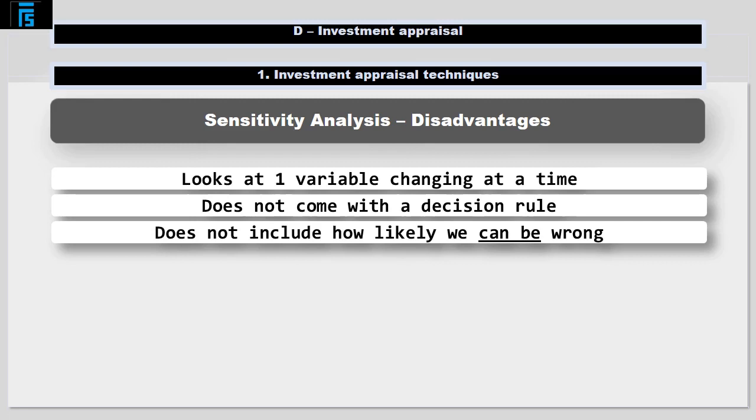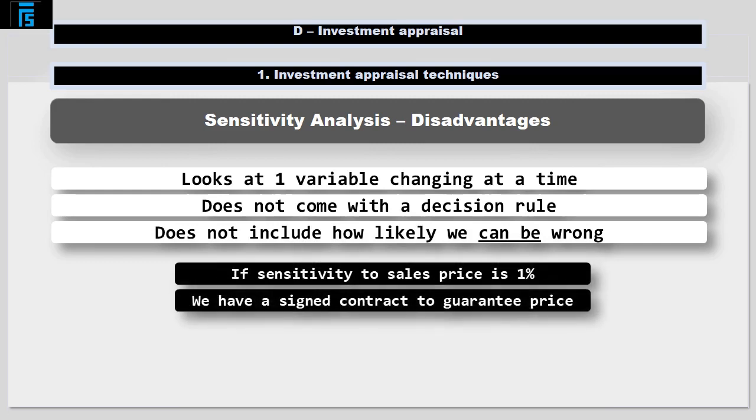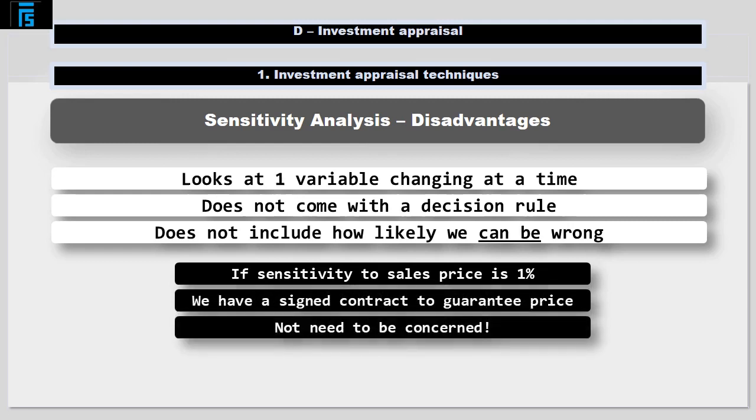Even though sensitivity analysis tells us how wrong we would need to be in order for the decision to change, nowhere in our analysis does it include how likely we are to be wrong. For example, on the face of it a 1% sensitivity to price might be worrying to the decision maker. However, if they have a signed contract in place guaranteeing what the price will be should they go ahead, there is in fact no need to be concerned.